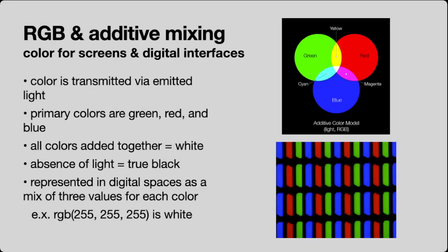RGB is an additive mixing model for screens and digital interfaces. Color is transmitted via emitted light rather than light reflected off pigment. The primary colors are red, green, and blue. All these colors added together gives white — which is why it's additive — and the absence of light is true black. Each pixel on a screen is actually three points of light in these three colors. In digital space it's represented as three values; RGB 255, 255, 255 is white because we're maxing out all three points of light.